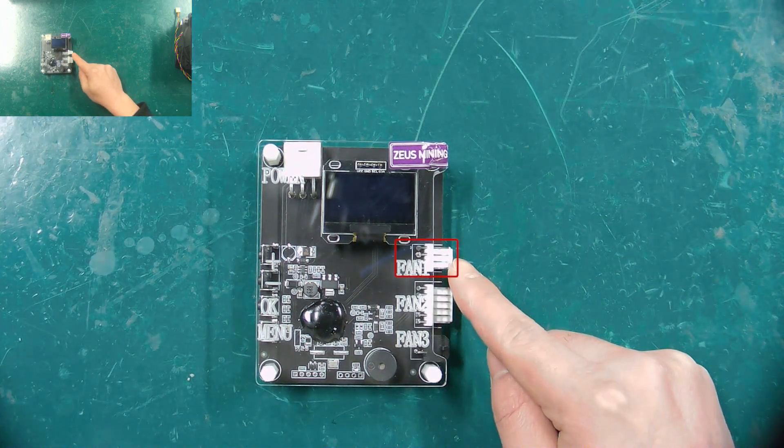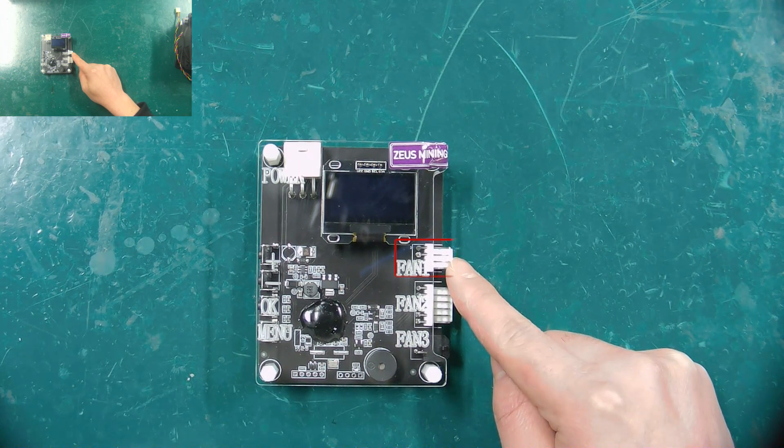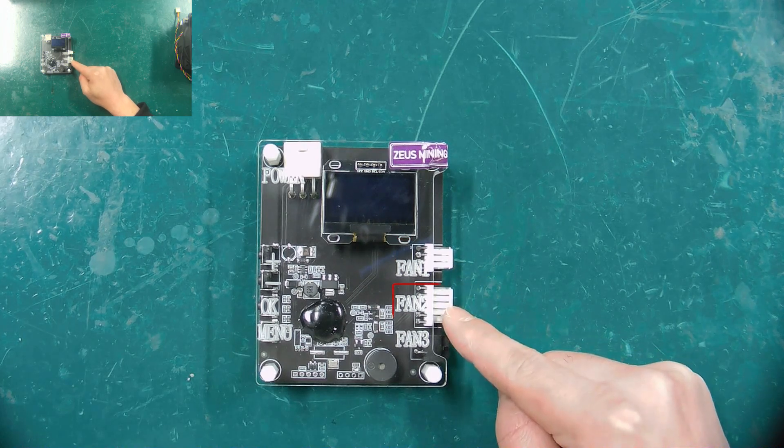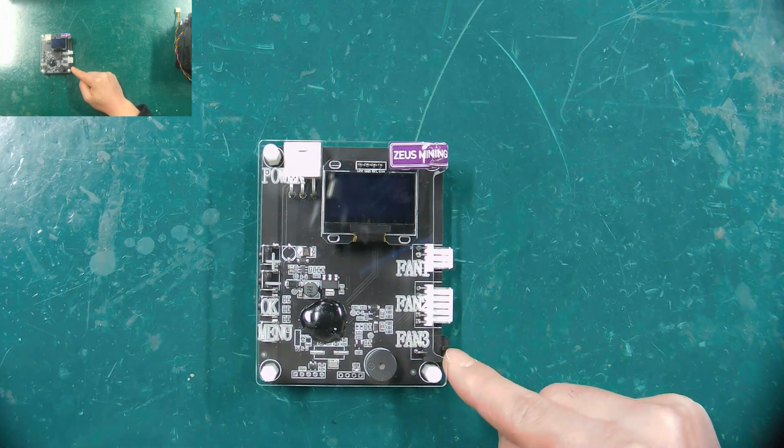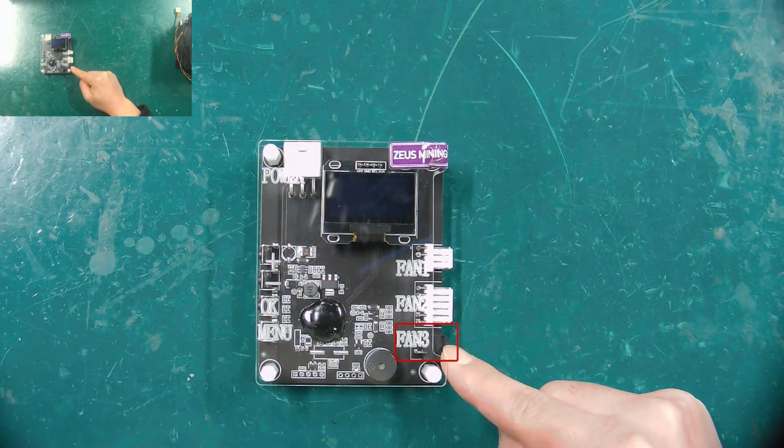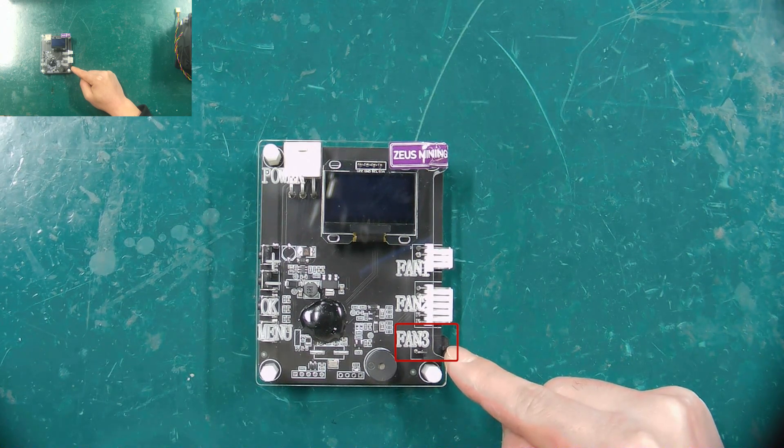4-pin fan interface, used to connect 4-wire fans such as Antminer, Innosilicon miner, etc. 6-pin fan interface, only used to connect Whatsminer fans. Finally, this is also a 4-pin fan interface, but it is only used to connect Avalon miner fans.